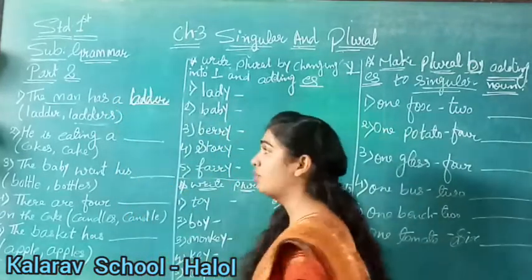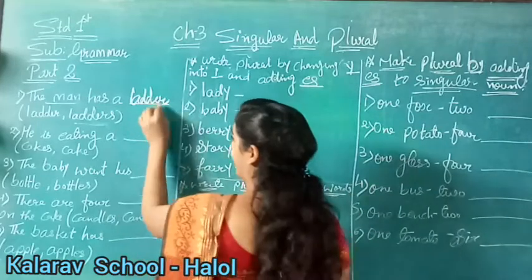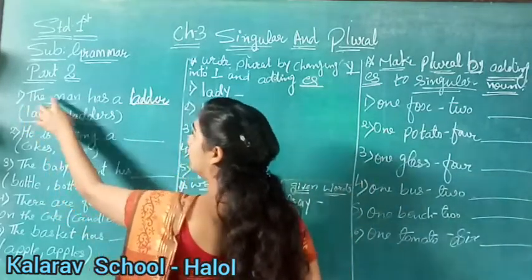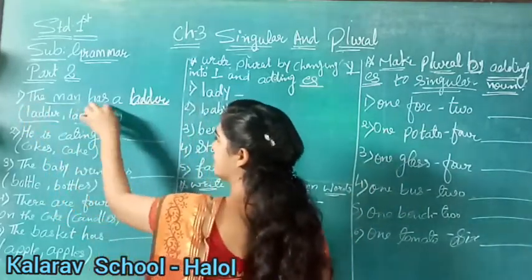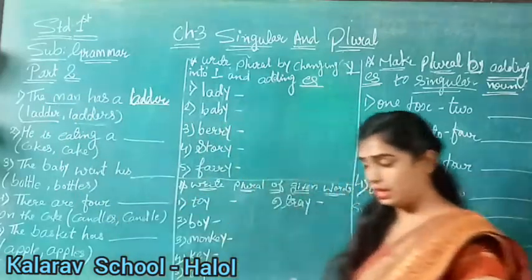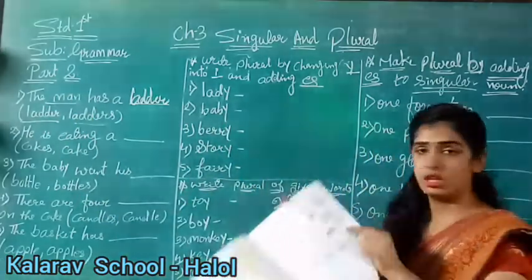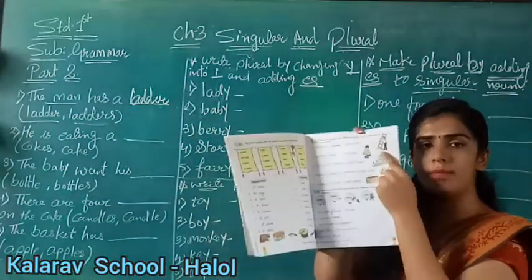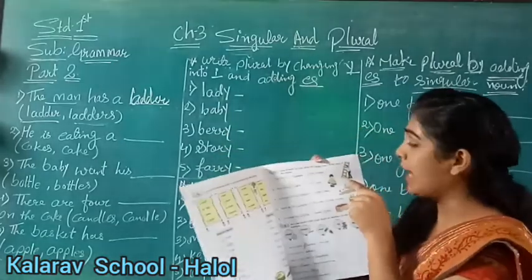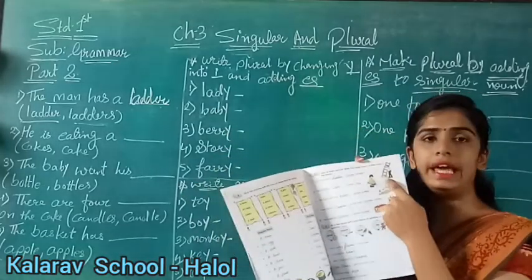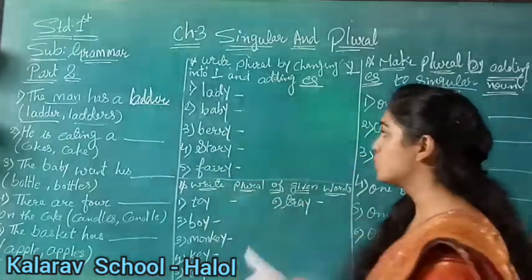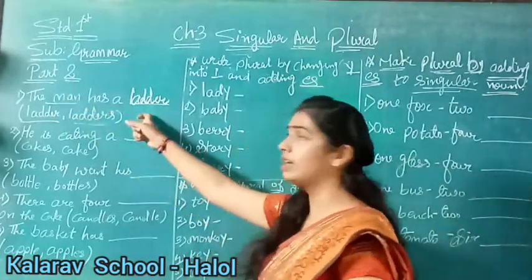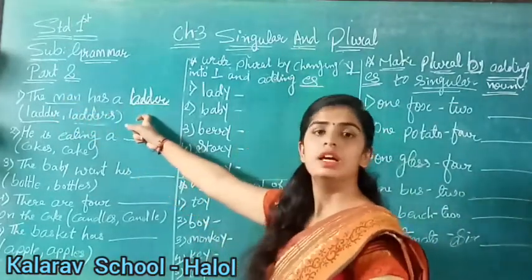How can we identify that we have to write letter here? Because it says 'the man has a blank.' See the picture - here is a picture of a man, and you can see only one man. The man has what? He has a letter. So here is only one man - it is singular. That's why we will write letter.